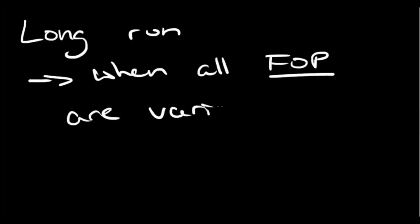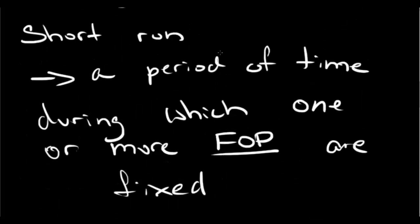The long run is when all factors of production are variable — not fixed. This means that over a long enough time period, nothing you have is considered fixed. For example, a building isn't a fixed cost because over time you might be buying new buildings, upgrading, moving into a larger building, or renovating. This could be a span of 10, 20, 30, or even 50 years, over which all your factors of production become variable.